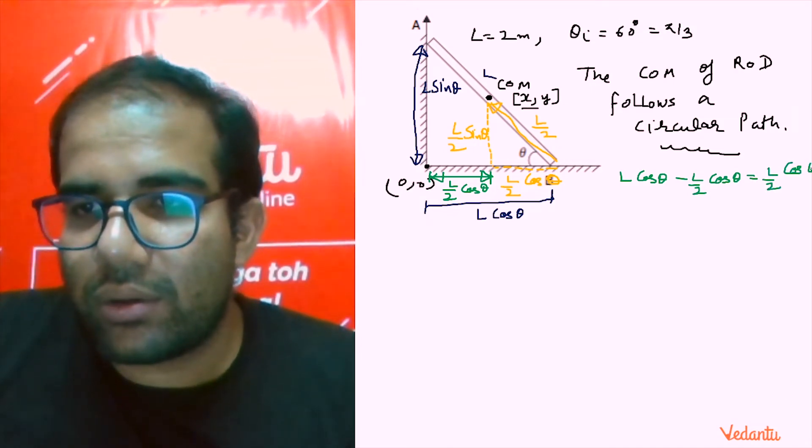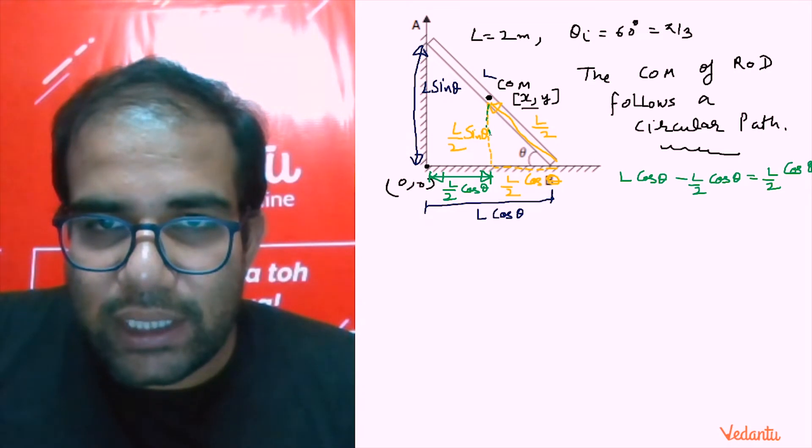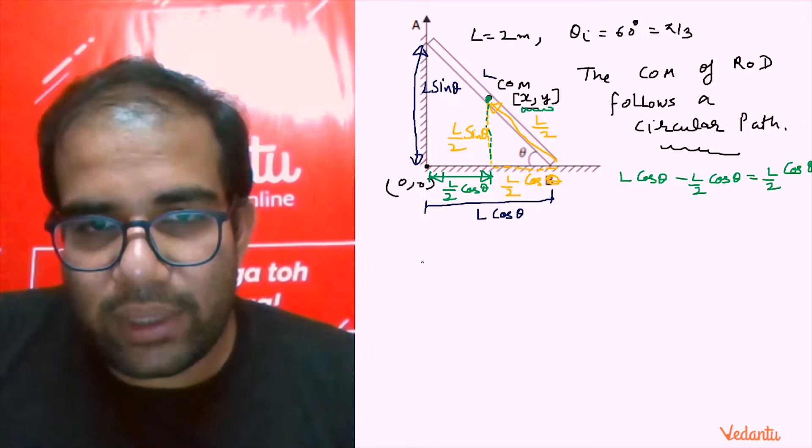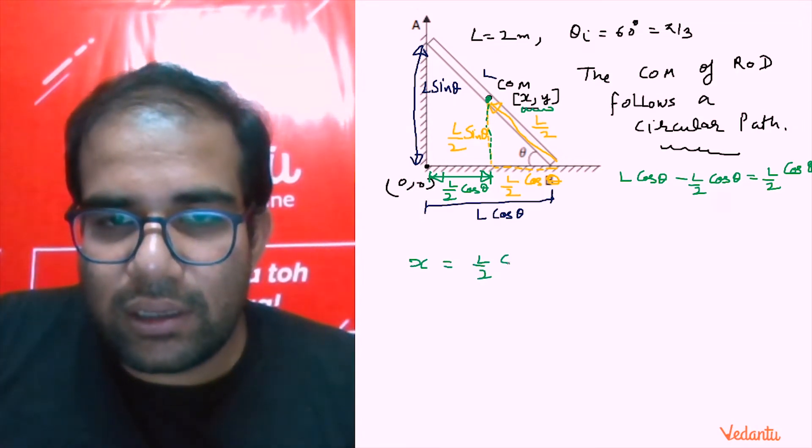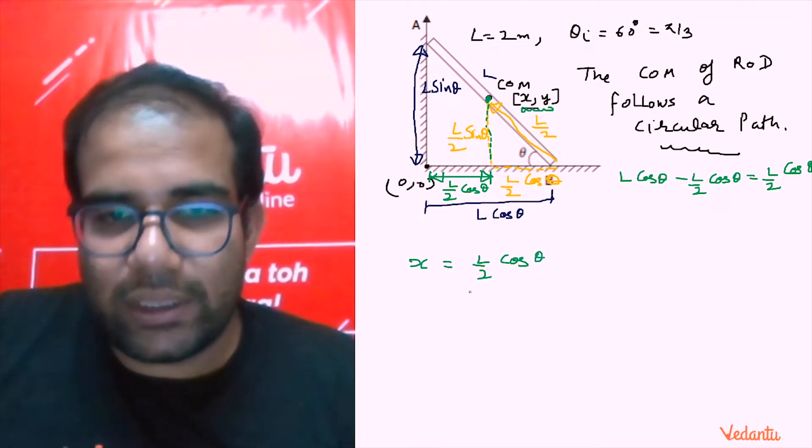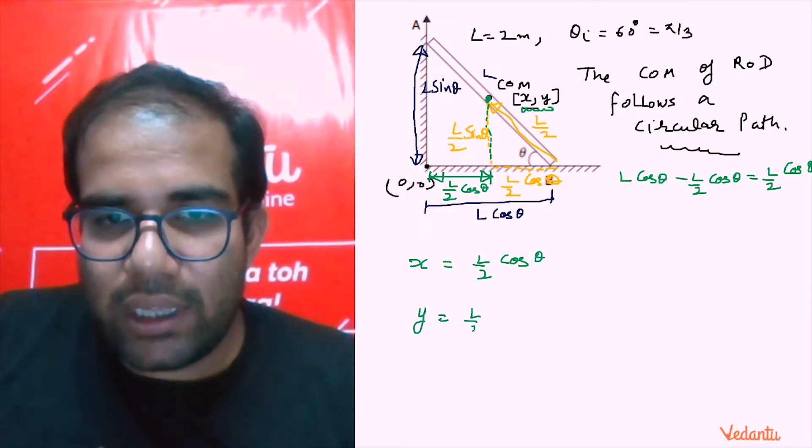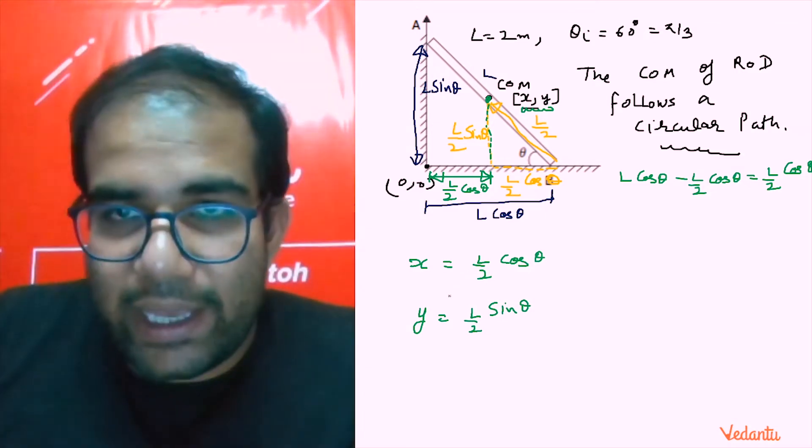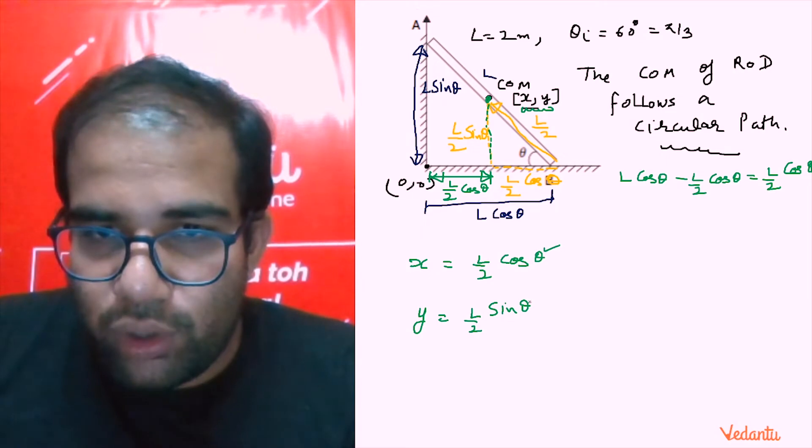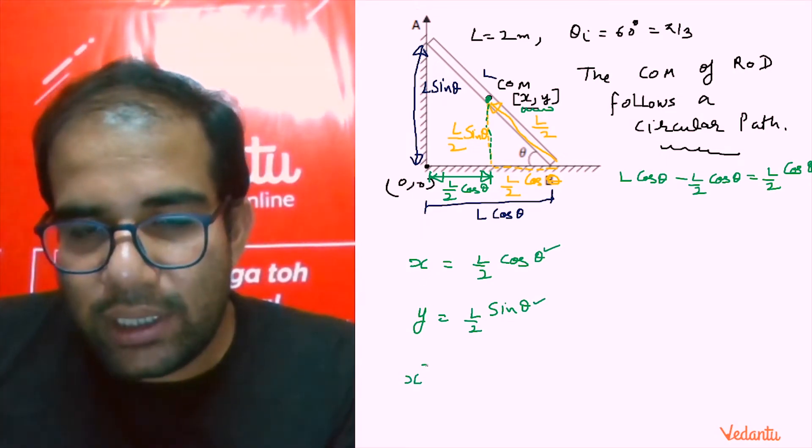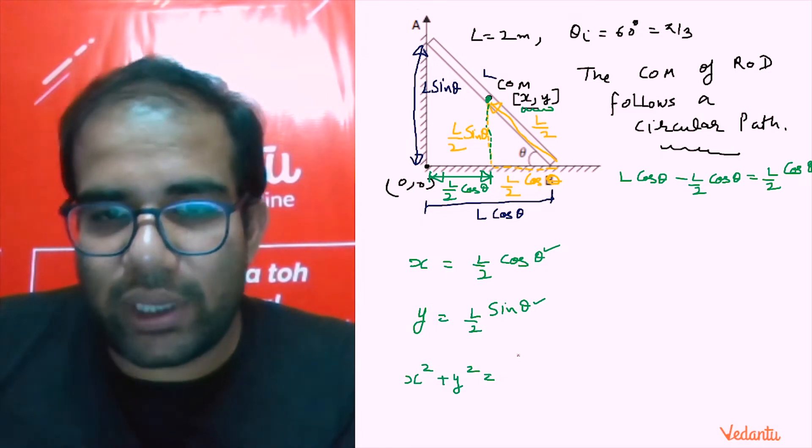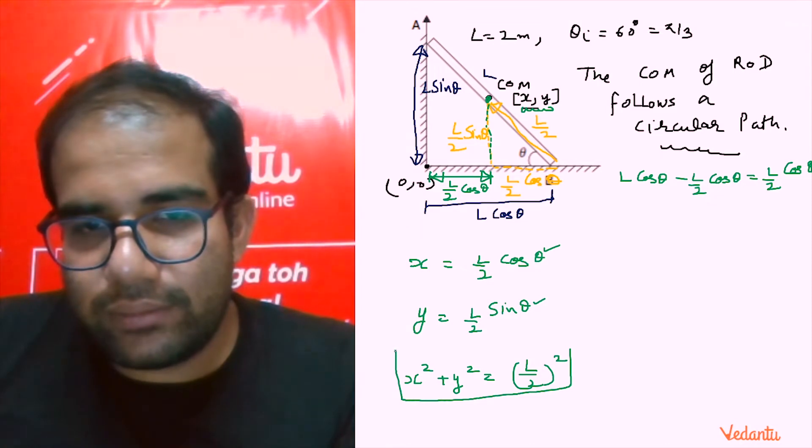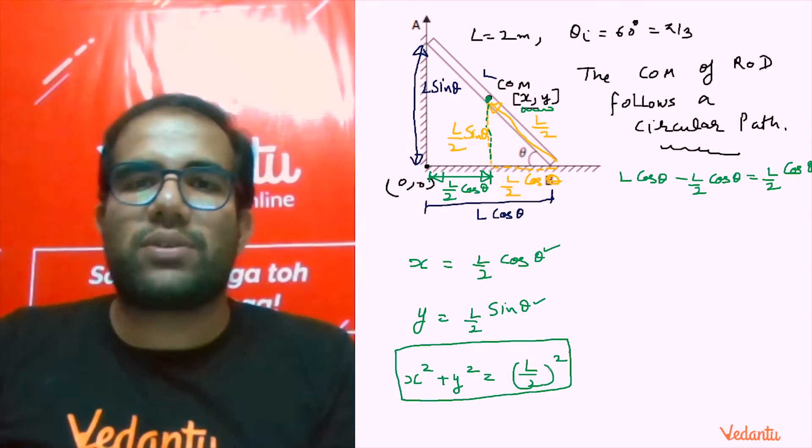You can see the coordinates are x comma y, so x is L by 2 into cos theta and y is L by 2 into sine theta. Now you can see I have x, I have y, theta is variable. I want to eliminate theta. If I simply square them and add them, I will get x square plus y square is equal to L by 2 square.